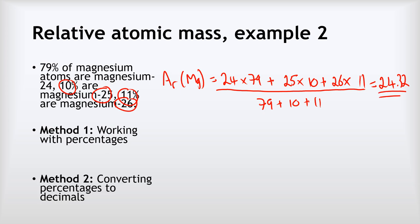Alternatively, I could do it just working straight with decimals, by converting my percentages into decimals. So Ar of Mg equals 24, that's the mass of the first isotope, multiplied by 0.79, that is 79% as a decimal. Add that to 25, the mass of my second isotope, multiplied by 0.10, because that's 10% as a decimal. And finally, add on 26, that's the mass of my third isotope, multiplied by 0.11, because that's 11% as a decimal. If I do that, I come out to the same answer again, 24.32.